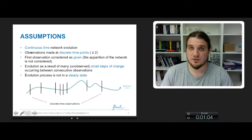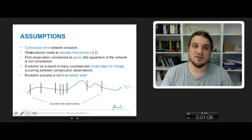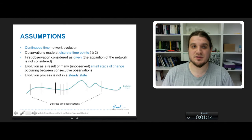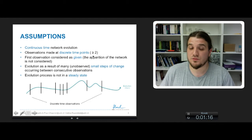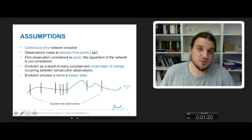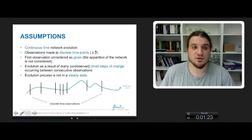Even if the observations, so the data you have, the observations of these networks are at discrete time points, so you have observations of dates and time. You have to have at least two observations of the network to make a modelling of its evolution.